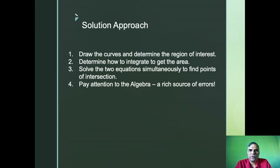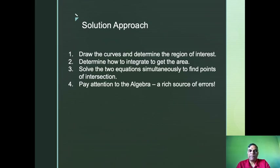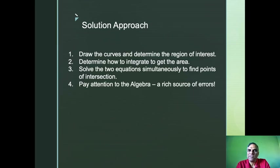Our solution approach will be: first, figure out the area of the region of interest by drawing the curves to get a visual picture. Then determine how to integrate to get the area. We'll solve the two equations simultaneously to find the points of intersection — pay attention to the algebra. I'll go slowly through each step and give you a few tricks to make difficult calculations easier.